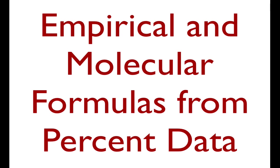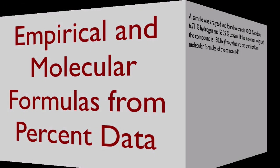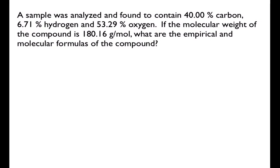In this video I'm going to go through how to calculate or determine the empirical and molecular formulas from percent data for a chemical compound. In this question we've been given the percent composition — it was analyzed and found to contain 40% carbon, 6.71% hydrogen, and 53.29% oxygen. We're also told that the molecular weight of the compound is 180.16 grams per mole. They want to know the empirical and molecular formulas for the compound.